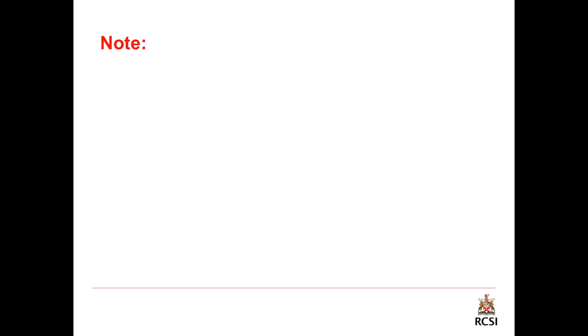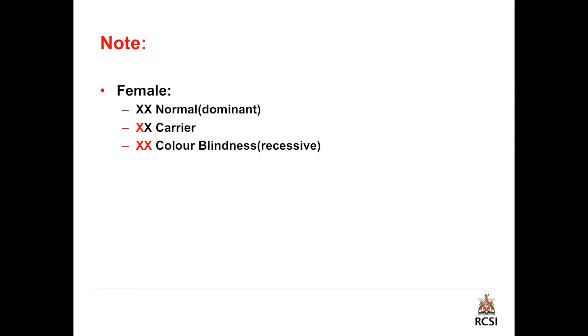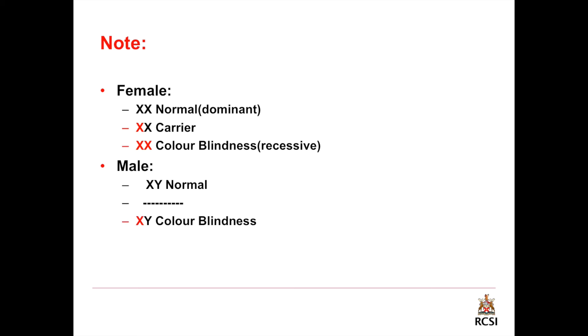Note that we have the female and the male categories. In females, there are three kinds: normal, carrier, and color blindness. For normal females, I colored both X chromosomes black. For carriers, I colored one X with red and the other with black. For color blind females, I colored both X chromosomes red. In males, we have just two types: normal and color blindness. Normal males are colored black and color blind males are colored red.